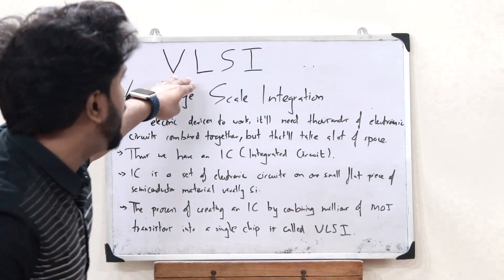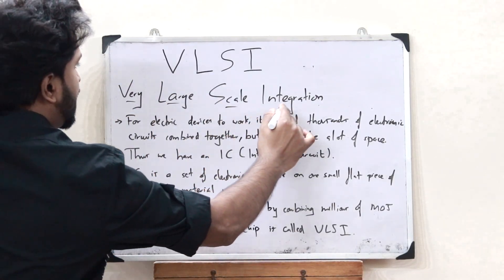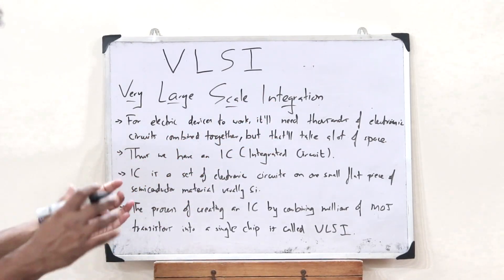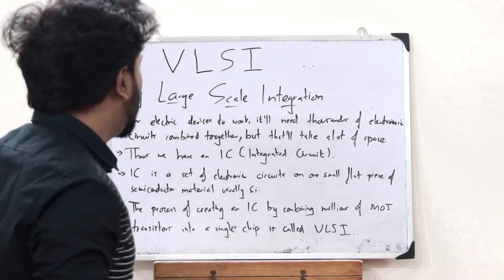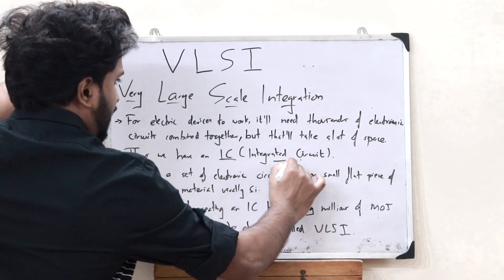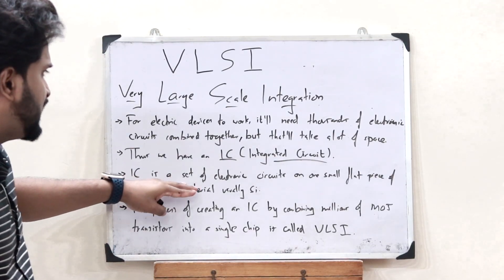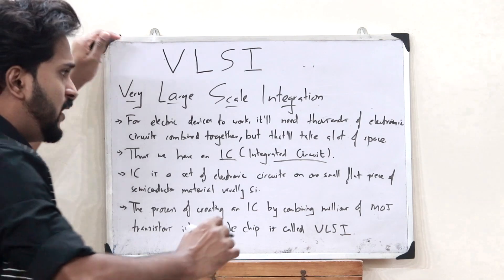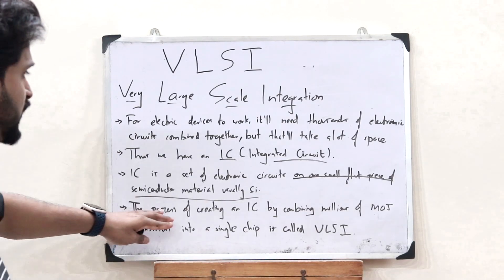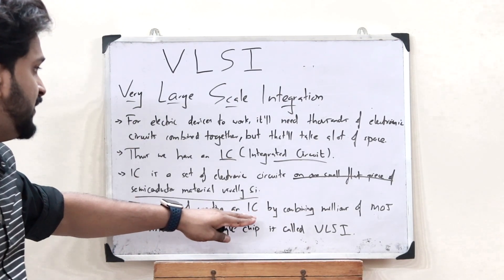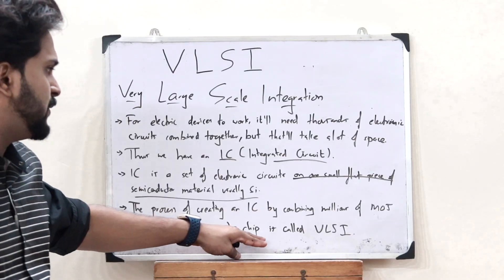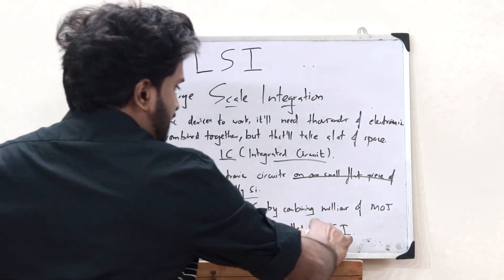Let me write it down. The full form of VLSI is Very Large Scale Integration. For electronic devices to work, they need thousands of electronic circuits combined together, but that takes up a lot of space. Thus, we have something referred to as an IC or an integrated circuit — a set of electronic circuits on one small flat piece of semiconductor material, which is usually silicon. The process of creating an IC by combining millions of metal oxide semiconductor transistors into a single chip is simply what you refer to as VLSI.